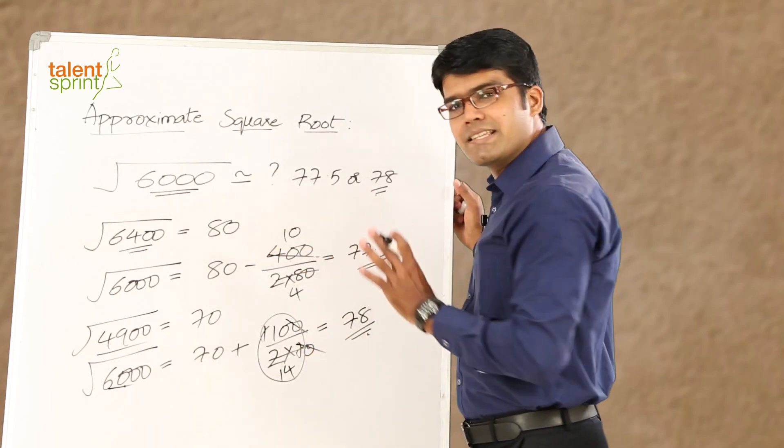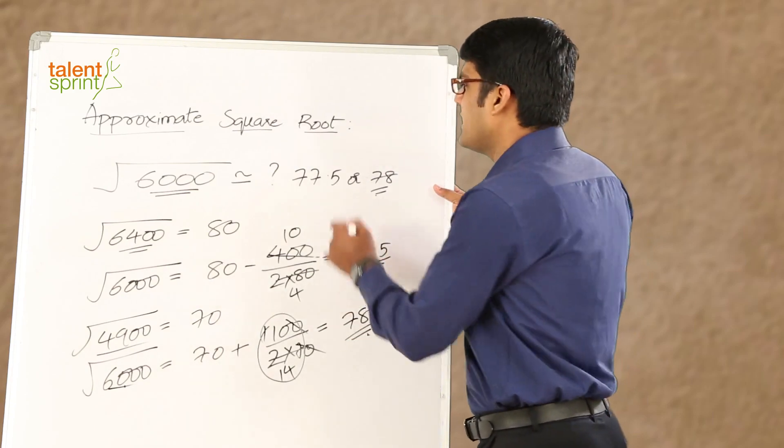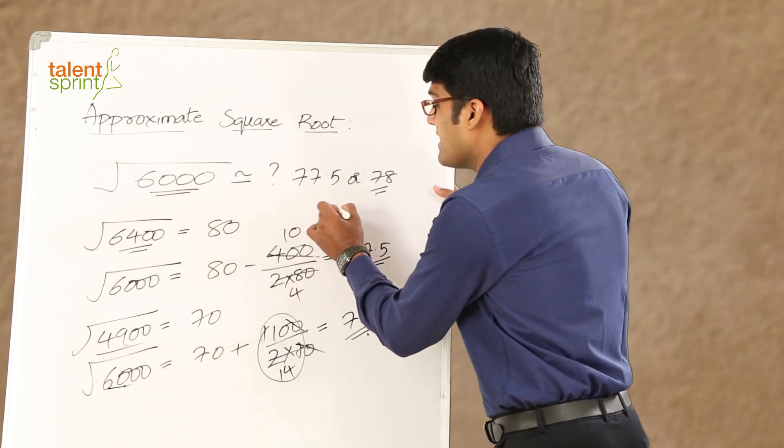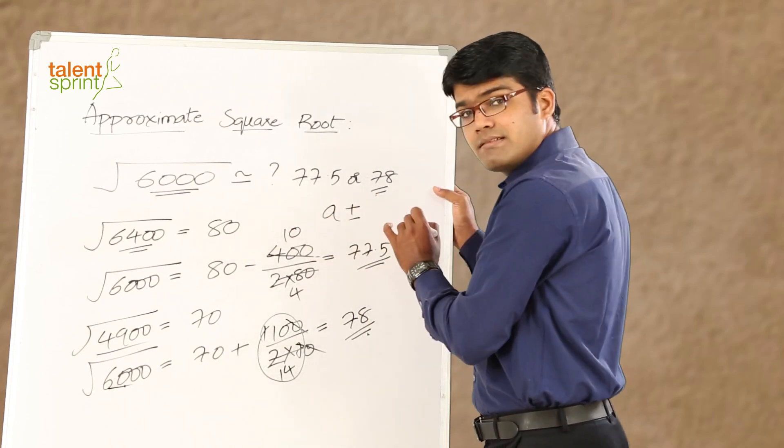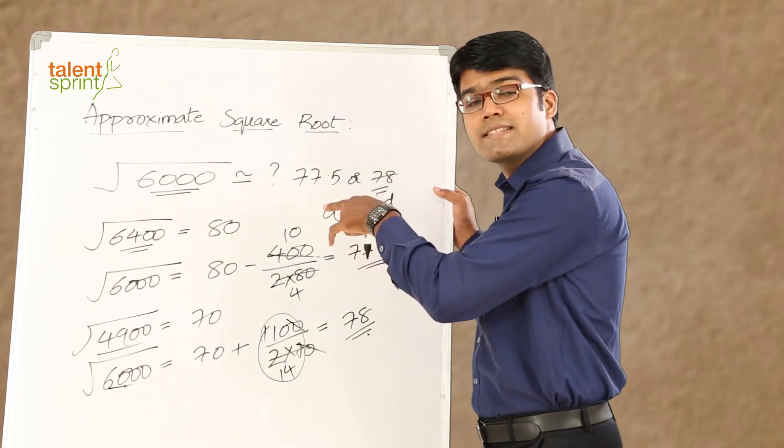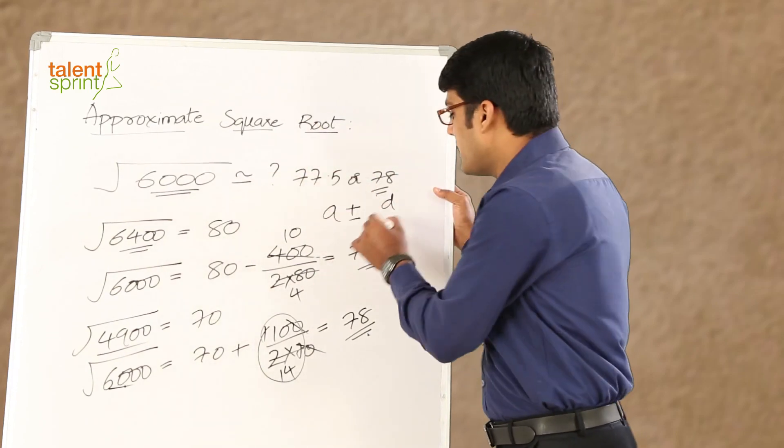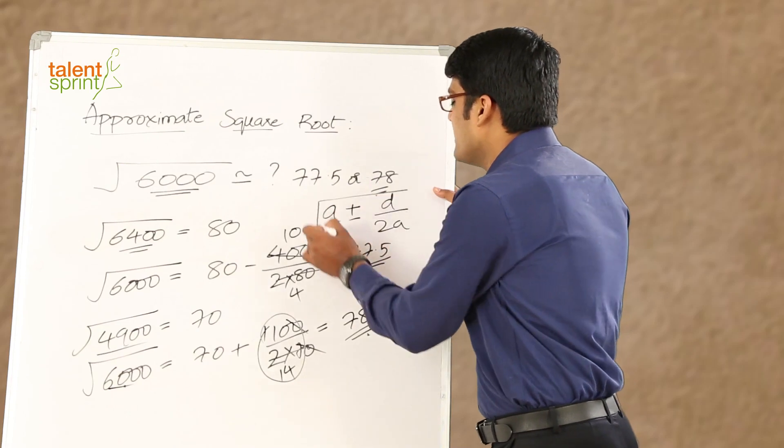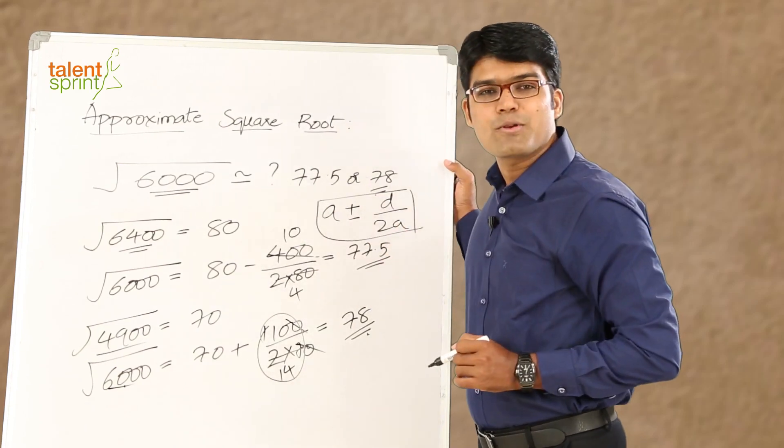All you need to do is take the nearest square more or less. Let us say the square root of which is a then a plus or minus the difference, the difference between the value that is given and the square that you have considered divided by 2 times a. So, here is the technique to find out approximate square roots.